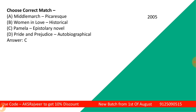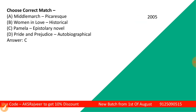Now, choose the correct match students. This was part of your UGCnet exam. The answer is C — Pamela is an epistolary novel. This question appeared on your UGCnet exam in the year 2005.